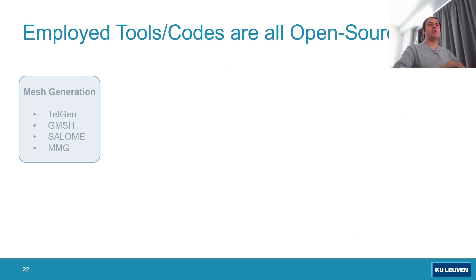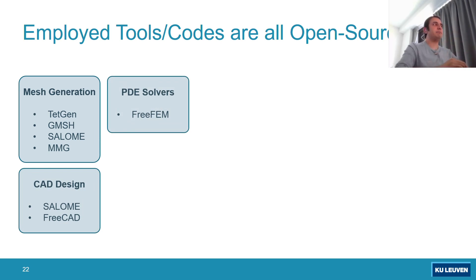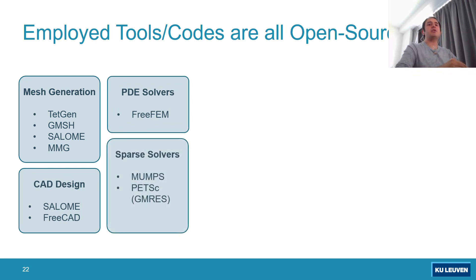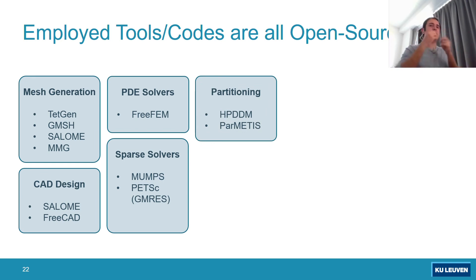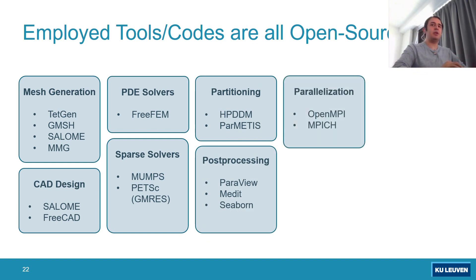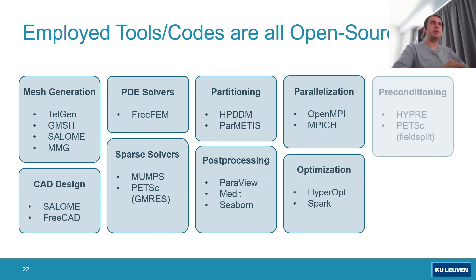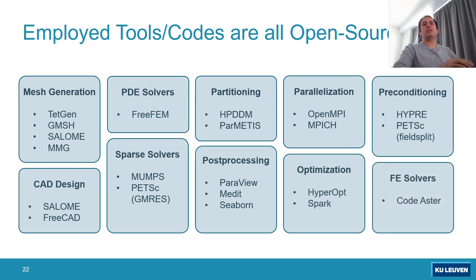All employed tools are open source. The meshing tools used are mainly Gmsh, Salome, and MMG. For CAD design, Salome and FreeCAD. For PDE solving, the language FreeFEM. For solving the equations, PETSc and METIS for partitioning the mesh across CPU cores. For mesh decomposition, ParMETIS and HPDDM. For post-processing, ParaView and Seaborn. For parallelization, two open source MPI implementations. For optimization and model calibration, Hyperopt and Spark. For preconditioning and high-performance solutions, PETSc. For mechanical analysis, Code_Aster.